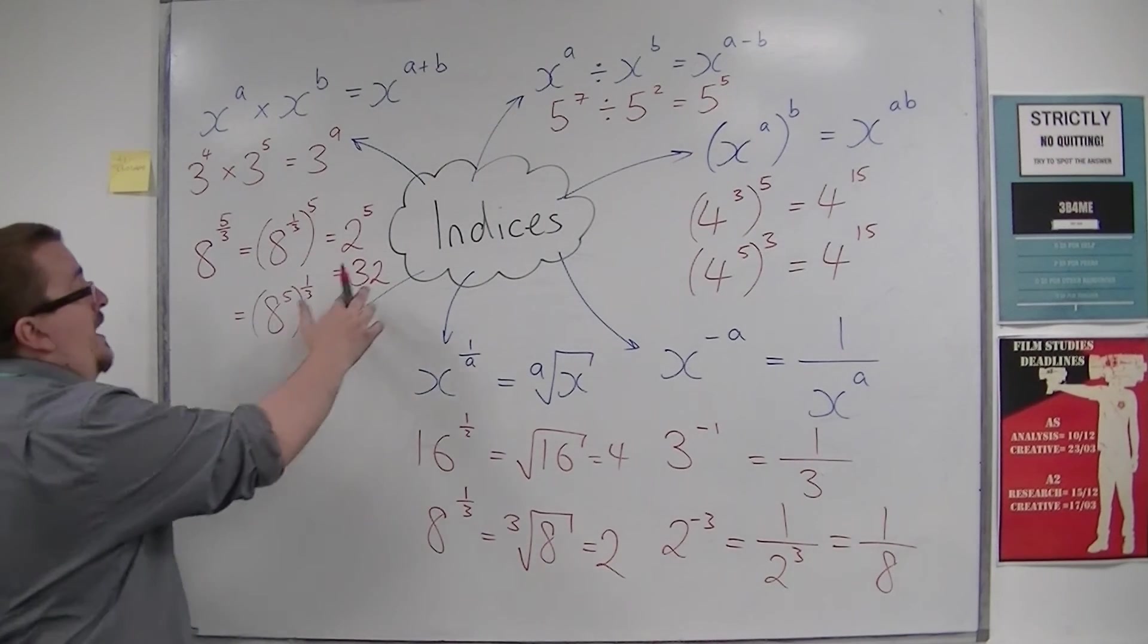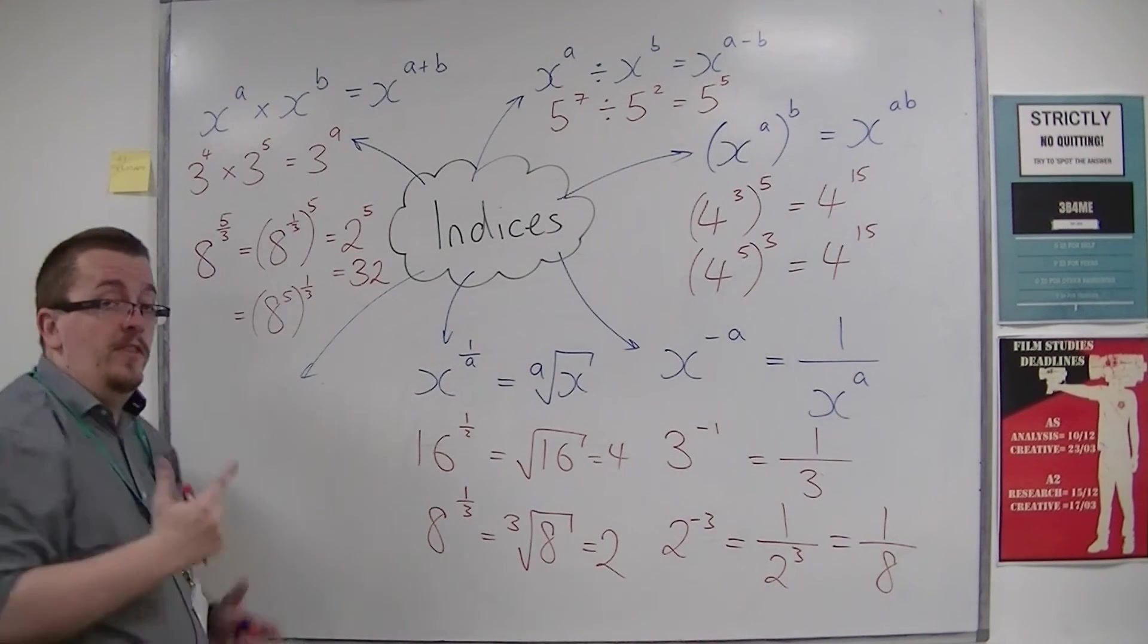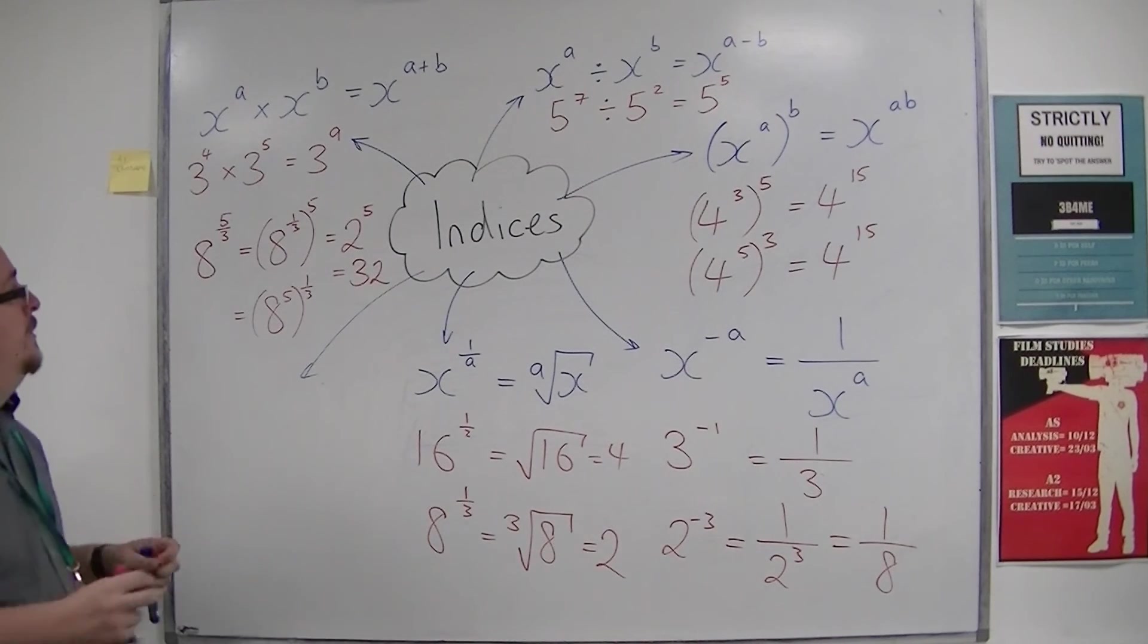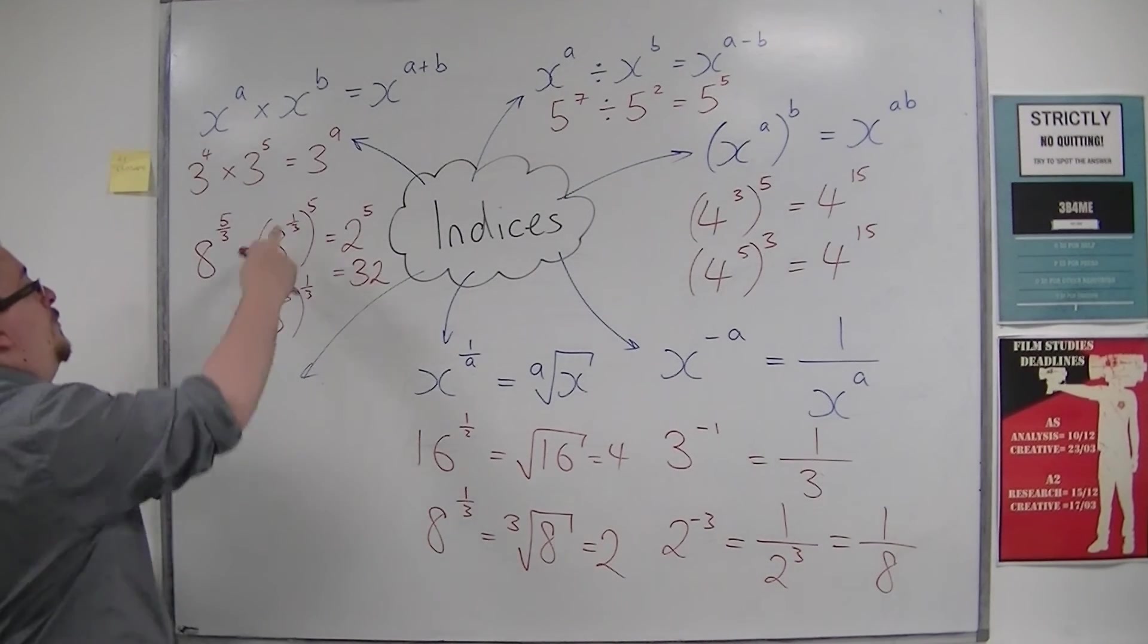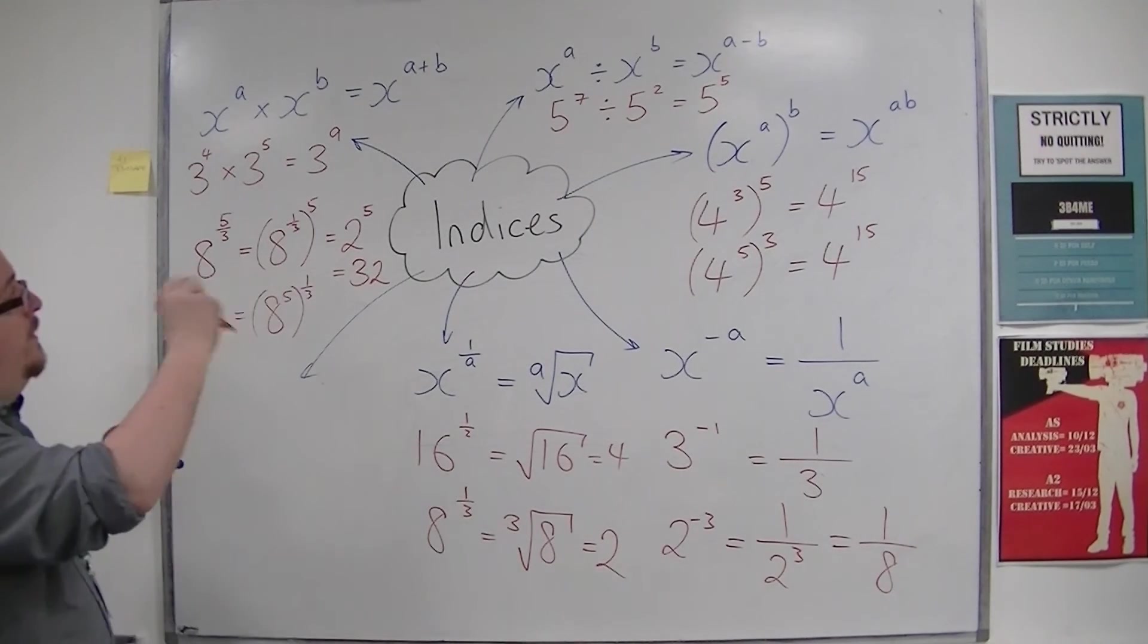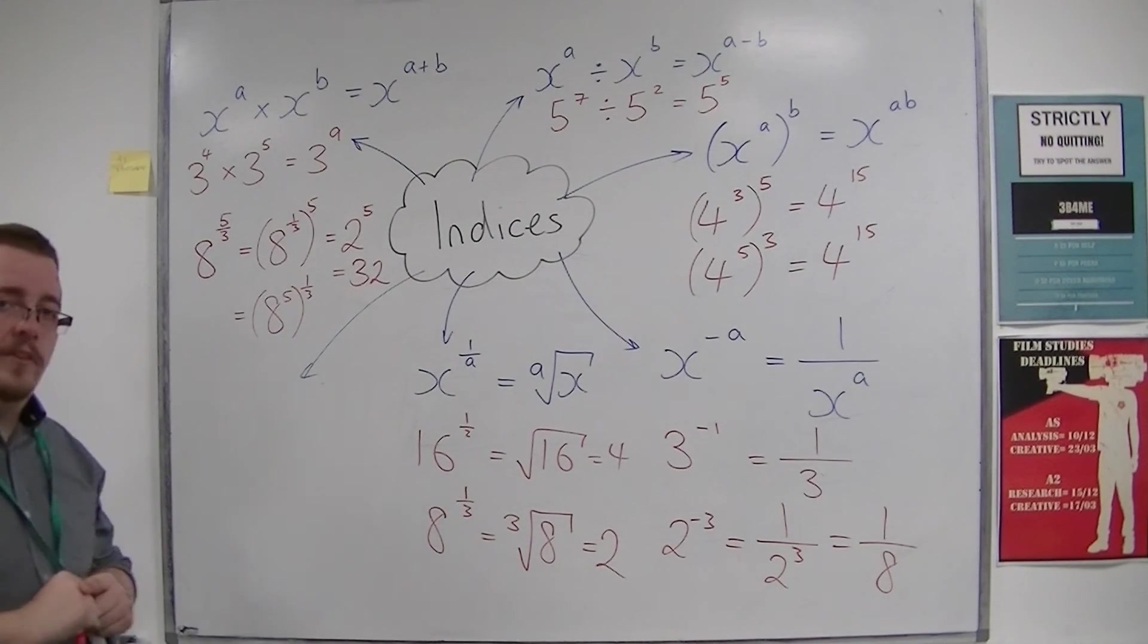So I wouldn't necessarily recognize the cube root would be 32. This is a non-calculator paper, remember. So it is best to usually do the root first and then do the squaring or the cubing or to the power of 5 in this case.